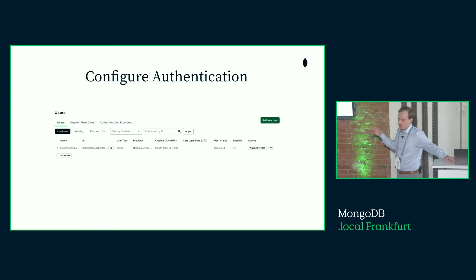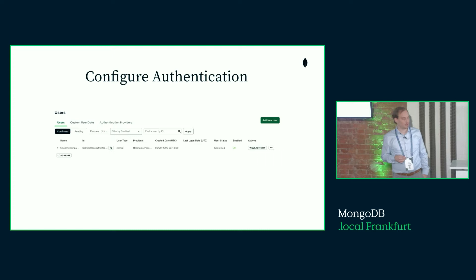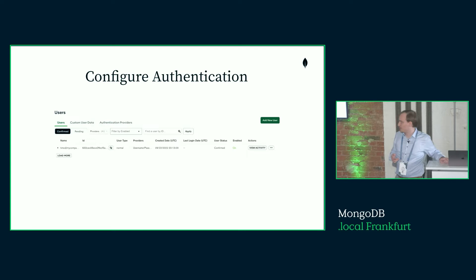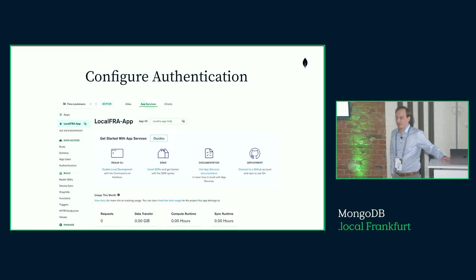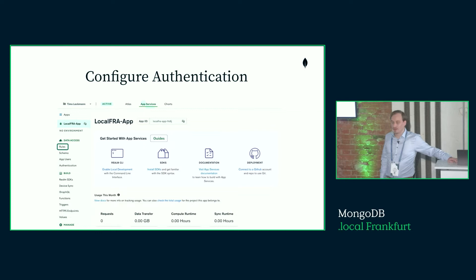The next step is creating a user. Using username and password, I have a user created on Atlas App Services called timolachman@mycompany.com with a password assigned. With that, authentication is taken care of. The next step is authorizing users to actually do anything on the database, and for that we go into the rules section.